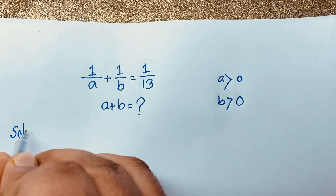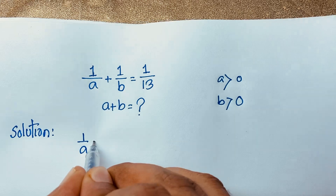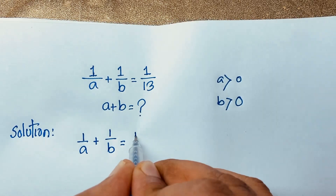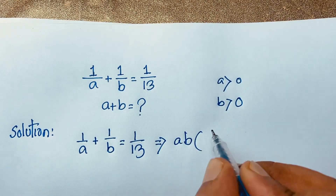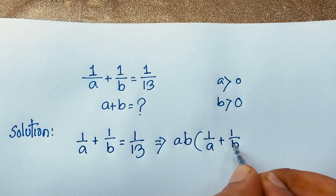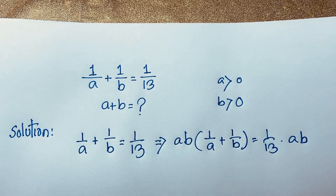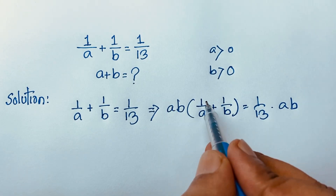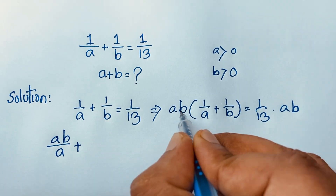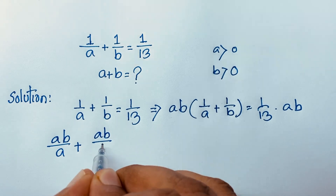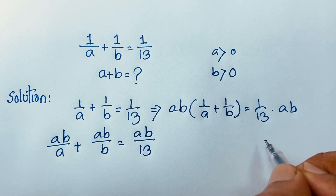So how to solve this interesting maths problem? Our question: 1 over A plus 1 over B is equal to 1 over 13. Now I multiply both sides by AB. So AB times (1 over A plus 1 over B) is equal to 1 over 13 times AB. This AB times 1 over A gives AB over A, plus AB times 1 over B gives AB over B, which equals AB over 13.